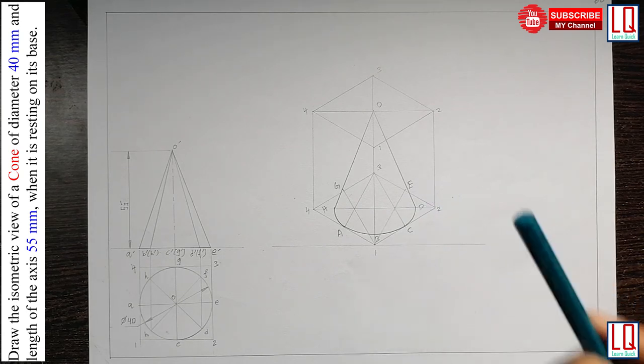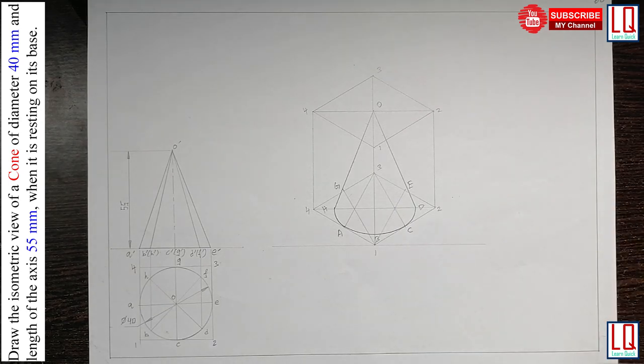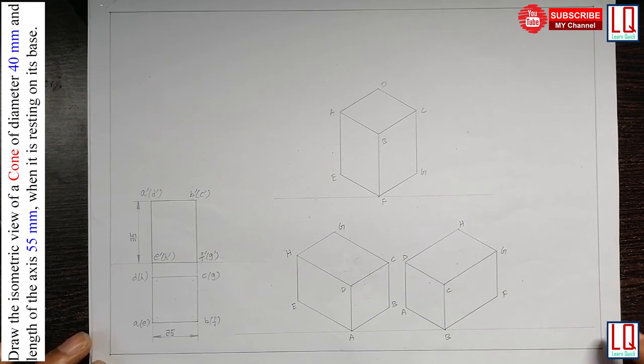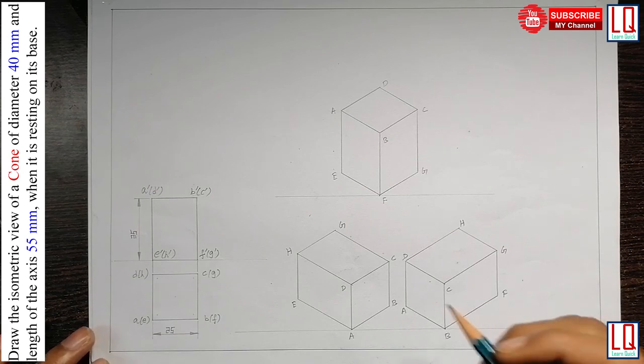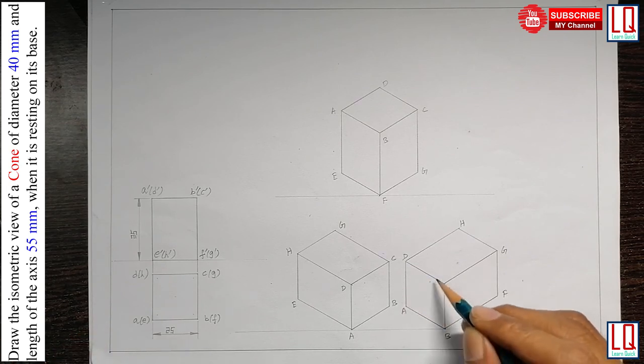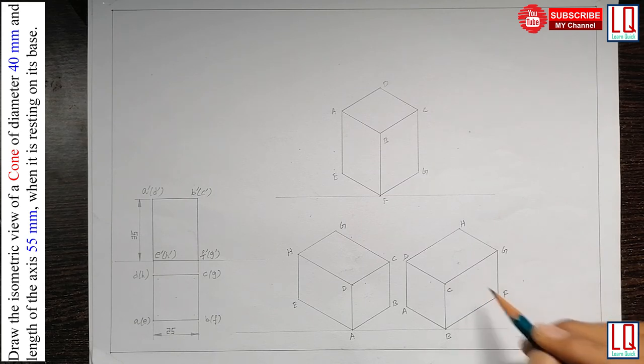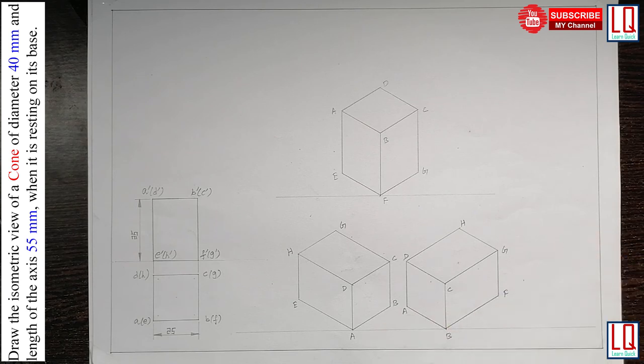The same cone can also be drawn keeping the base circle vertical. I hope you remember the isometric view of the square prism which we done in a previous video lecture. The box can be constructed in this manner and the vertical circle can be drawn here. In the A, B, C, D square, you can construct the base circle and you can have the midpoint in E, F, G, H square and you can make the cone lie down keeping the base circle vertical.